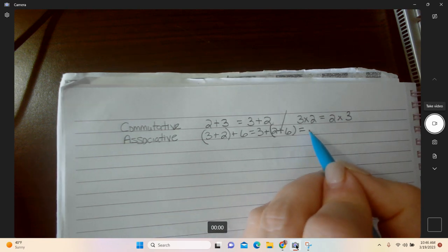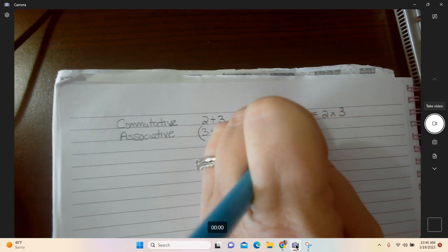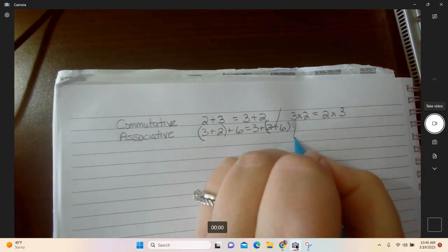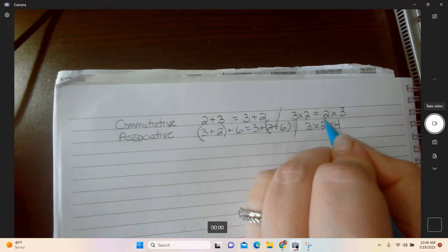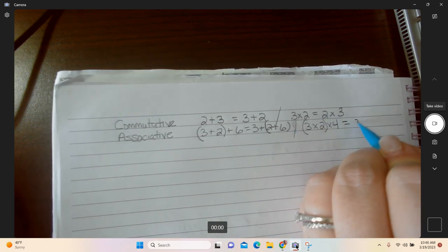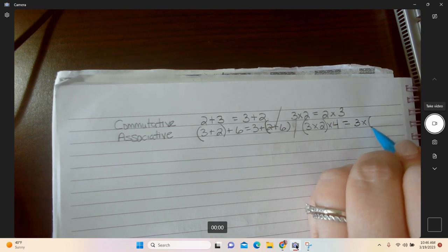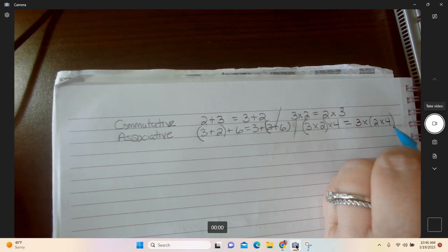That is the same for multiplying. For multiplying, the associative property works exactly the same way as for adding. If I did three times two times four, it would be exactly the same value as if I put the parentheses around the two and the four.